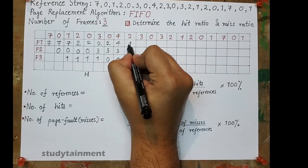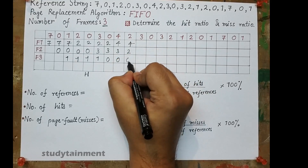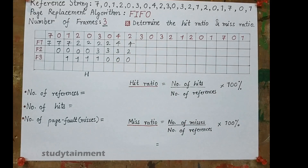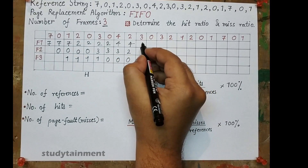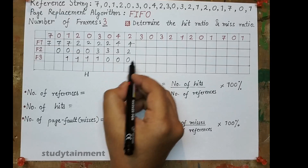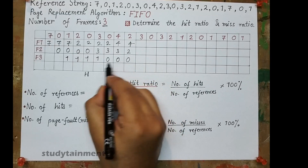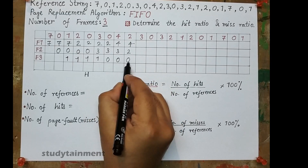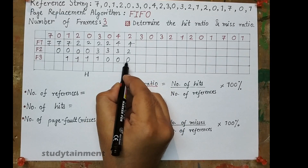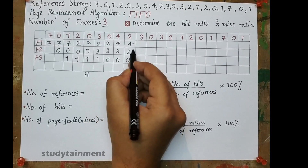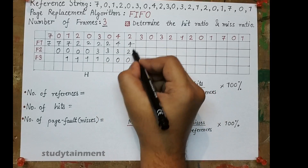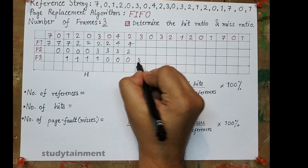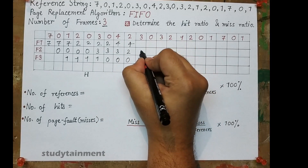Now 2 arrives. 3 is the oldest here, so 3 is replaced with 2. 4 and 0 remain as they are. Next, 3 arrives again. 0 occurred 3 times continuously, 2 for 1 time, and 4 for 2 times — so 0 is the longest and will be replaced with 3.